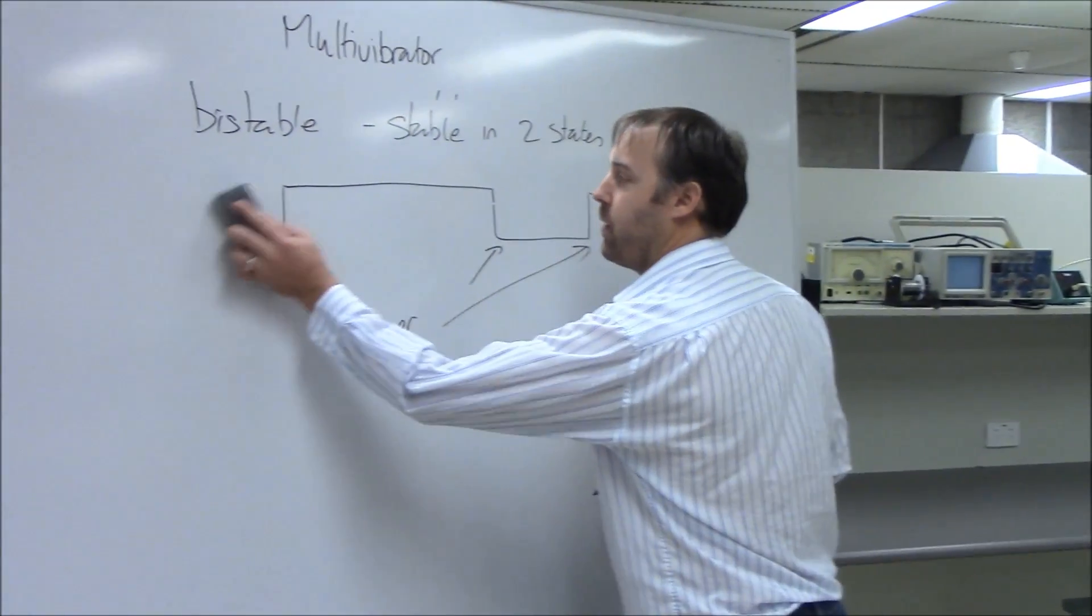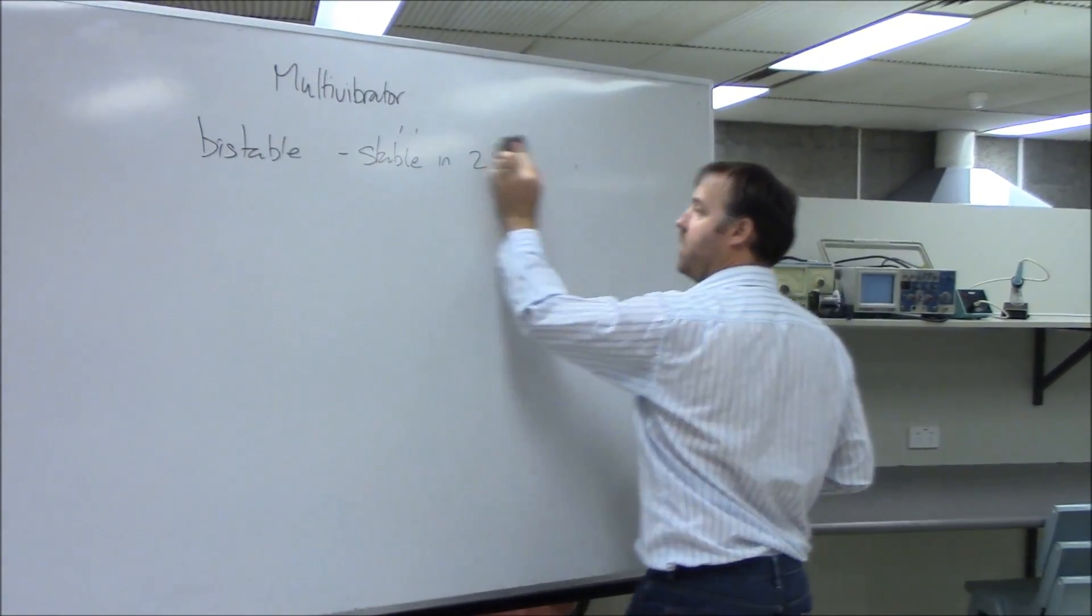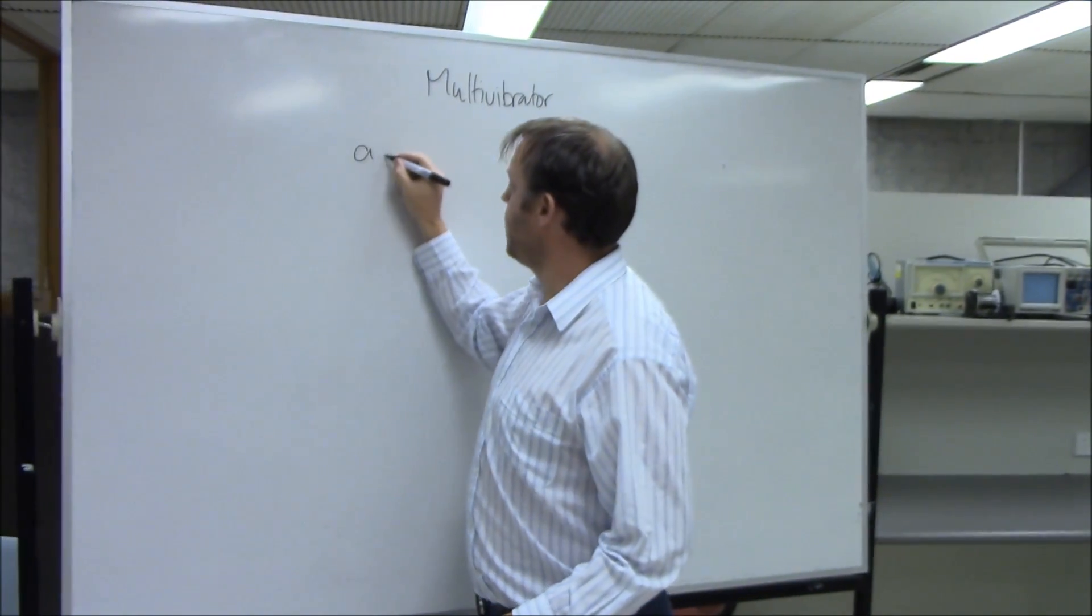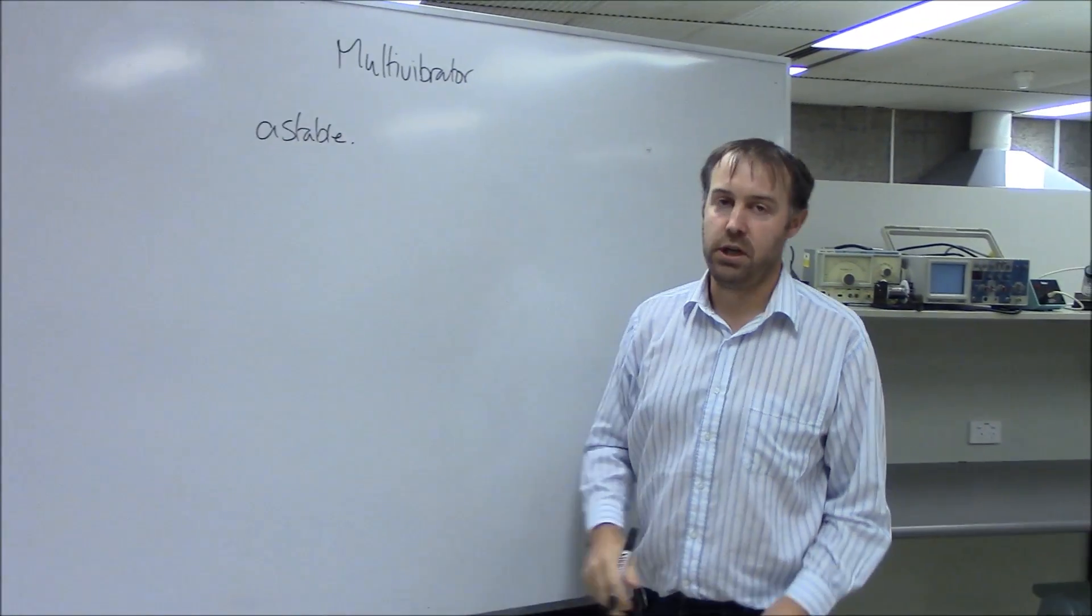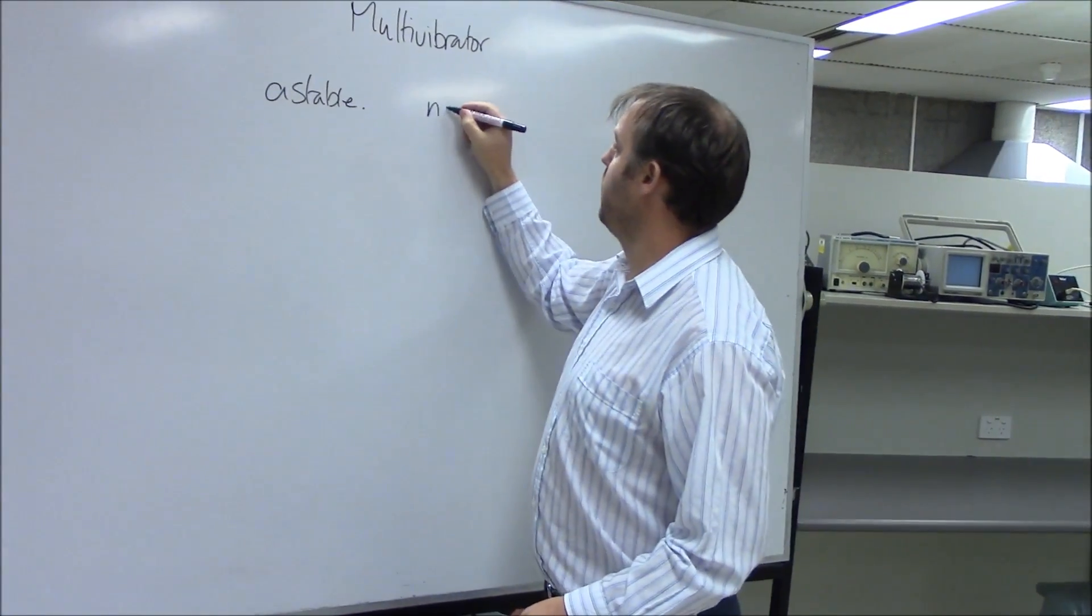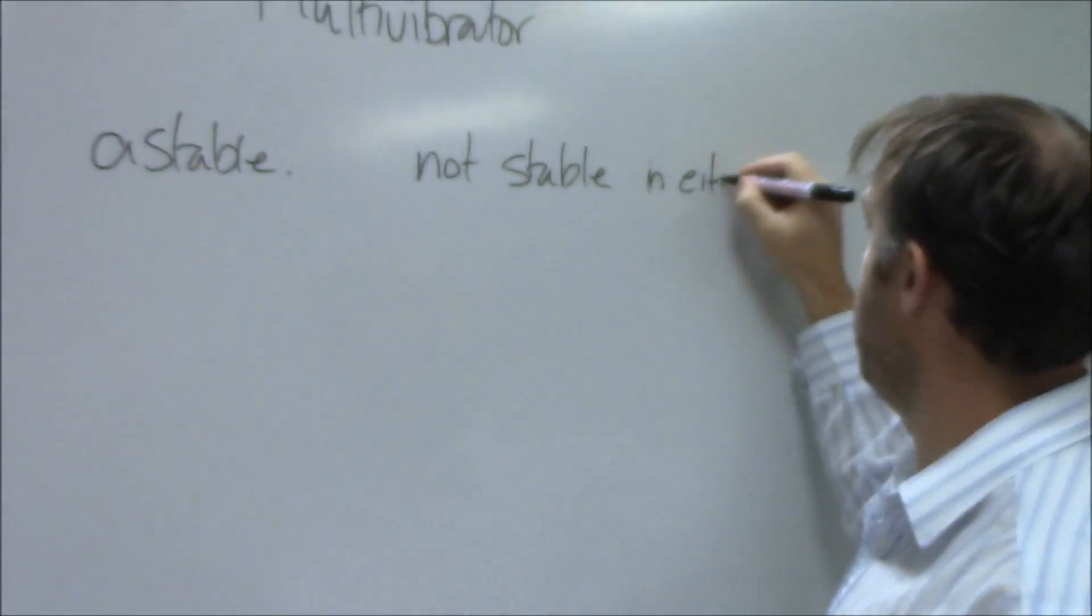The third type of multivibrator is one where it is not stable in either state, and that is the astable. A meaning not stable, so it's not stable in either state.